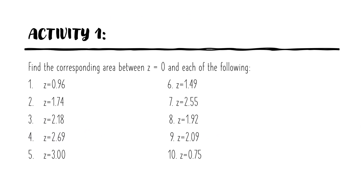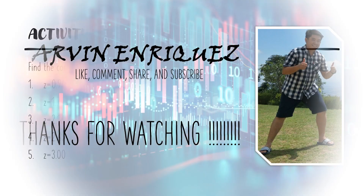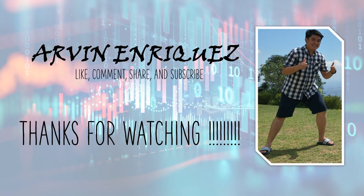For Activity 1 of this video lesson, find the corresponding area between z equals 0 and each of the given z-values using the z-table. Thanks for watching — like, comment, share, and subscribe.